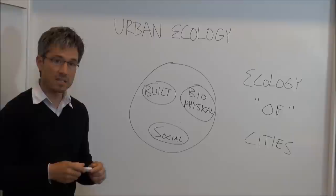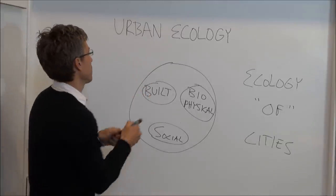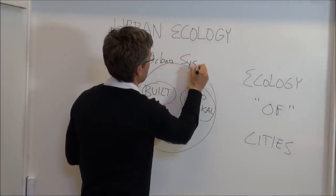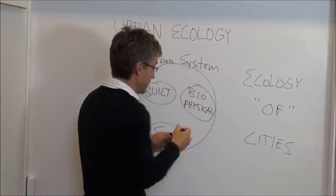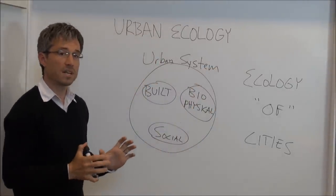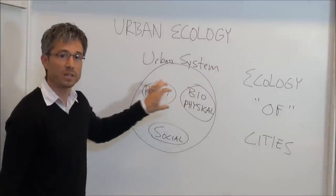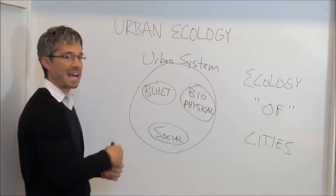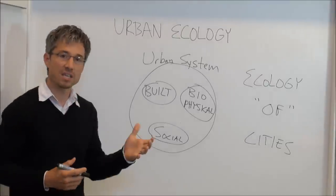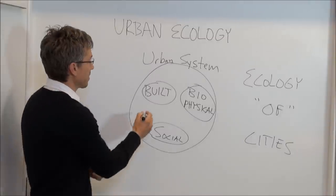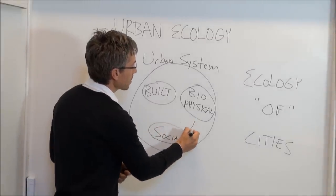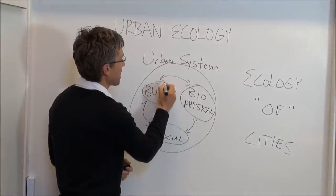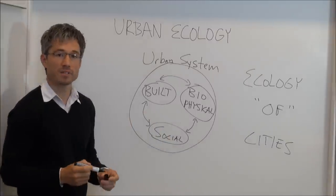This systems approach views the city as an urban system. It takes systems thinking to focus not so much on what's happening within a particular component, as in ecology in cities, but rather the ecology of the entire city as an ecosystem. In this view, the city is an ecosystem, and by taking a systems approach, we can use socio-ecological systems to focus on the dynamic feedbacks between interacting components in the system.